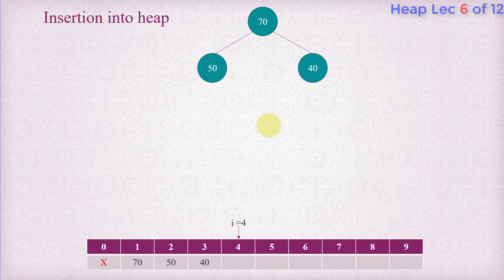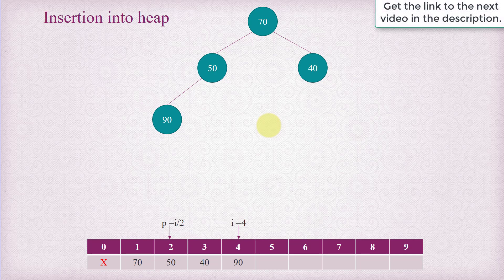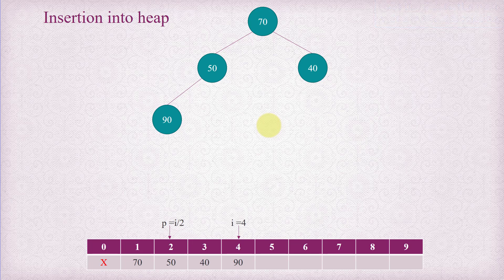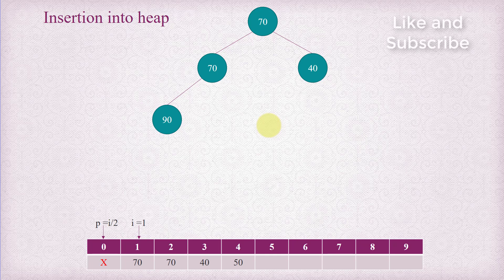Moving ahead, the next element is placed at index 4, and we have 90 this time. It's compared with the parent element 50, and since 50 is less than 90, we move 50 to index i to make provision for 90. Again we compare with the parent of index 2, which is 70. Since 90 is still larger than 70, we move 70 to index 2, then i goes to 2 and p goes to 0 — an invalid index. So we place 90 at index 1 and the heap is adjusted.